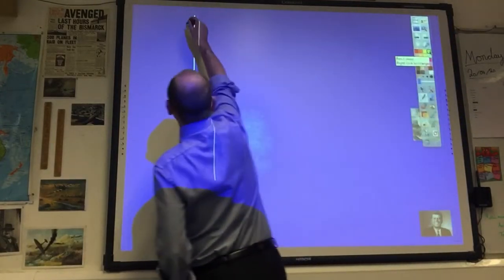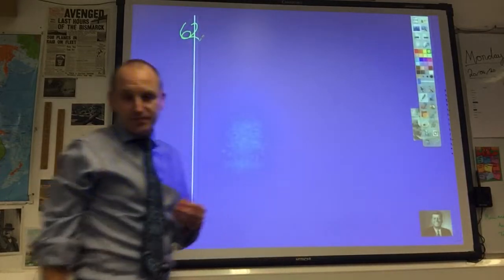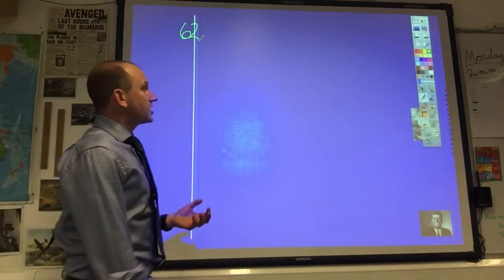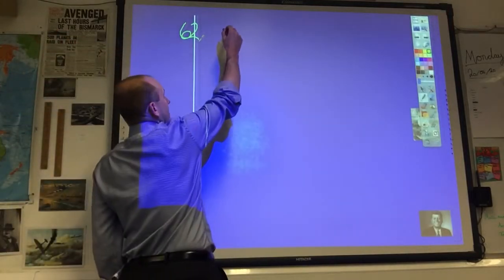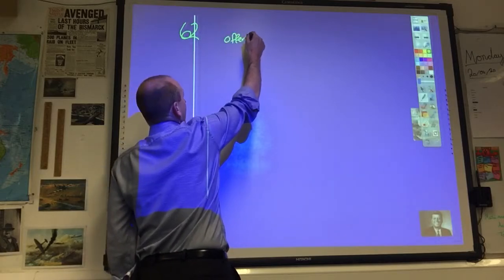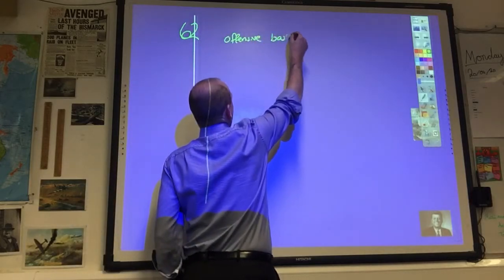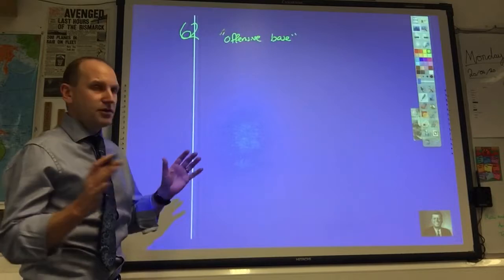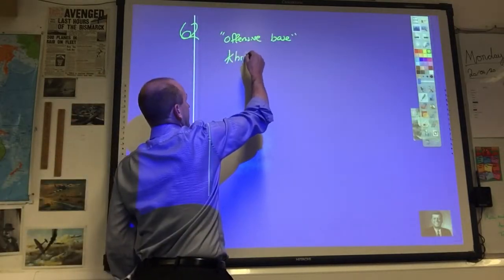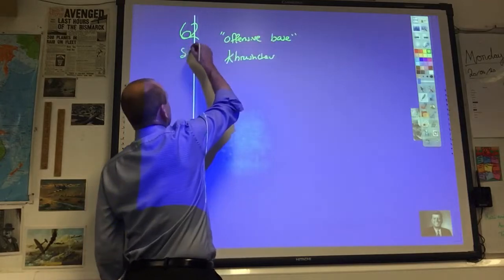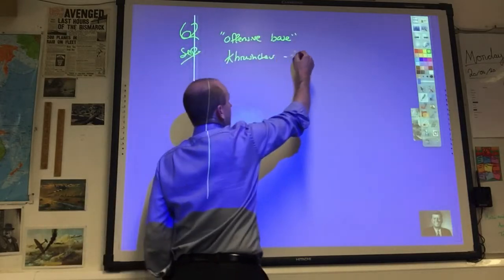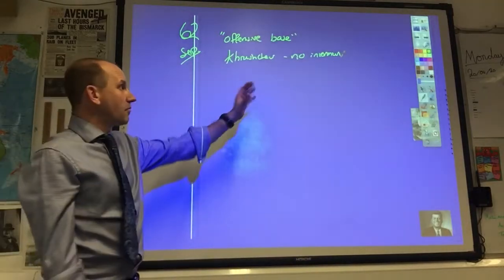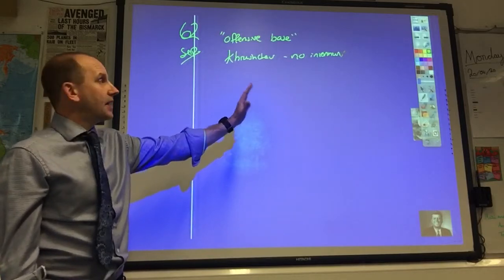Okay, Cuba now becomes the major focus for us in 62, this is the crucial year. By the time you get to September, you can see Khrushchev's starting to flex his muscles. Kennedy warns him not to make Cuba an offensive base, which means long-range nuclear missiles. And the Russians said they have no intention of doing that. Khrushchev says, this is September 62, just a month before the crisis, we have no intention of turning Cuba into a military base. We know that's not true. We know there are already missiles in Cuba by the time he says that in September. There are more on the way.